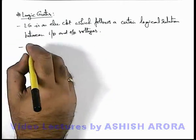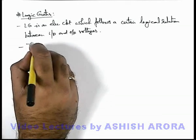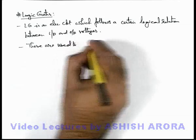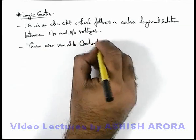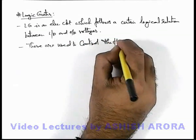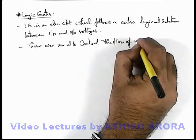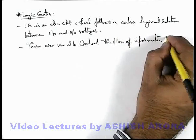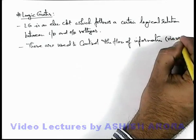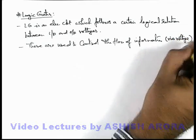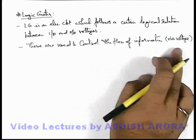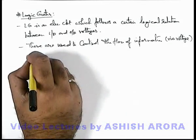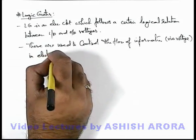We can also write that logic gates are used to control the flow of information, obviously via voltages. In electronic circuits, information flows via voltages only.